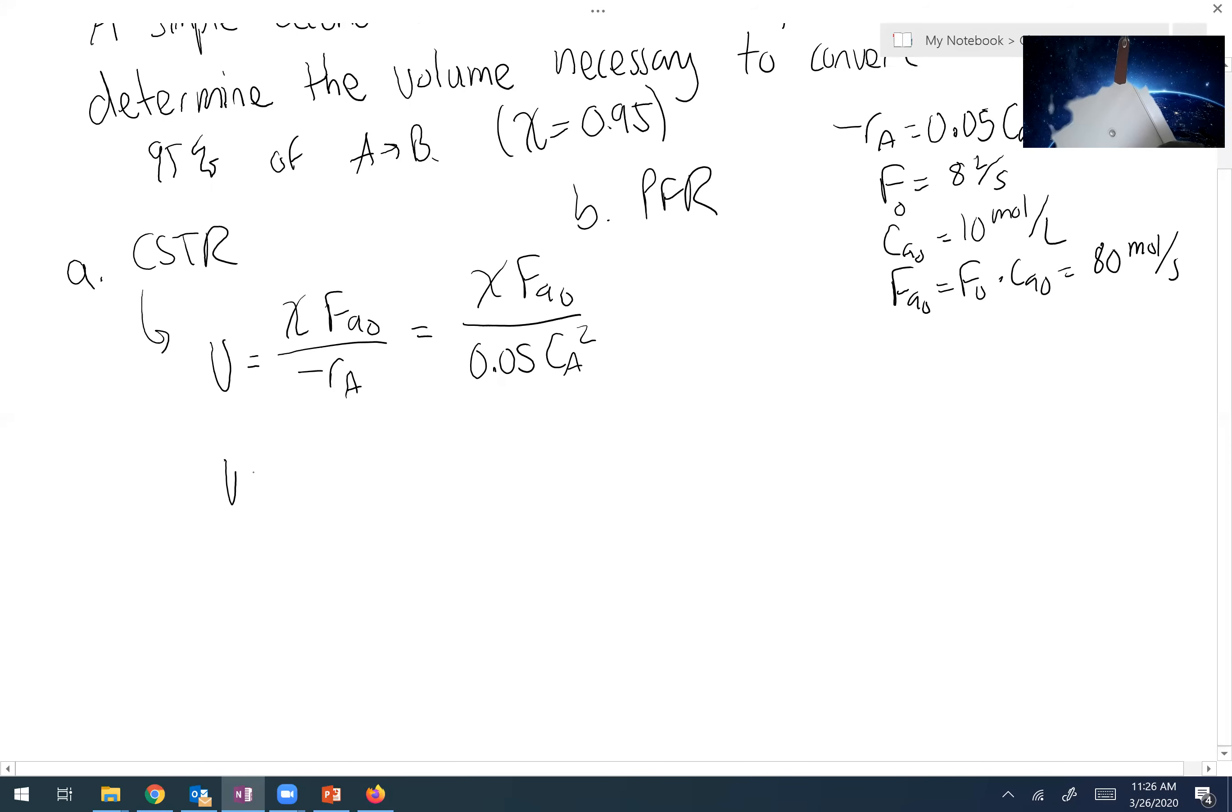So I can rewrite this expression as X times FA0 over 0.05 times CA, which is CA0 times (1 minus X), or conversion, squared. And if CA0 is 10 moles per liter, CA times (1 minus X) is 10 times (1 minus 0.95), which is 0.5.